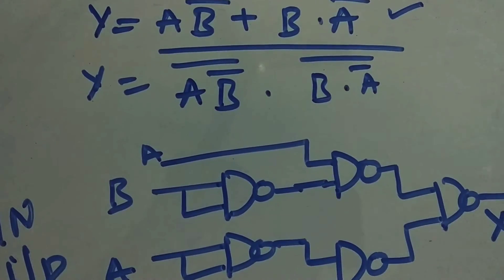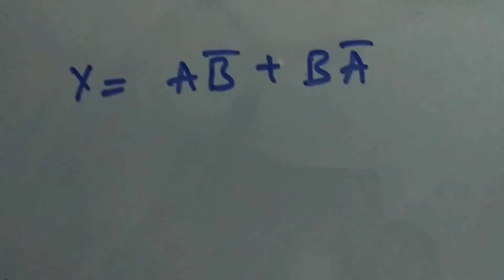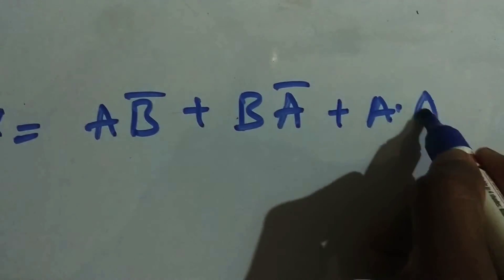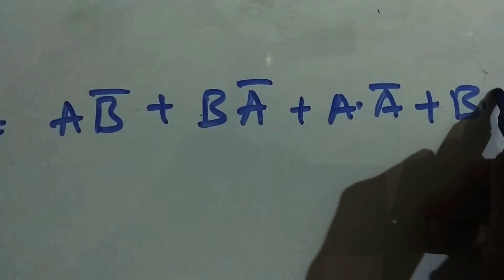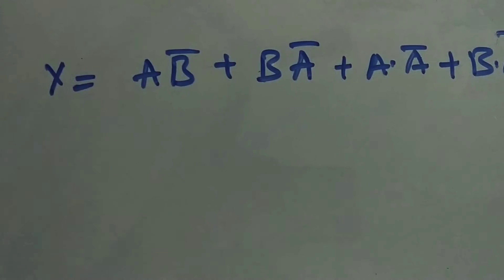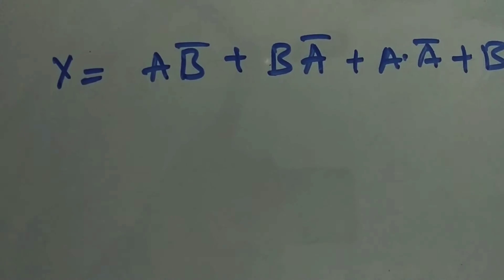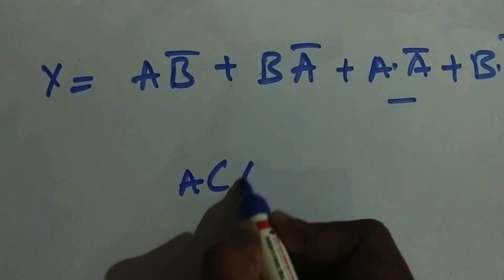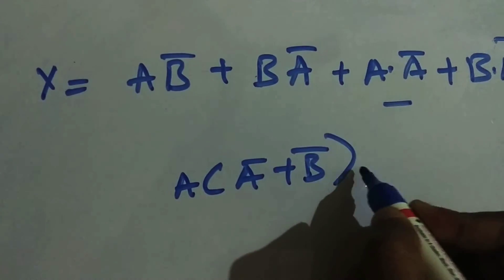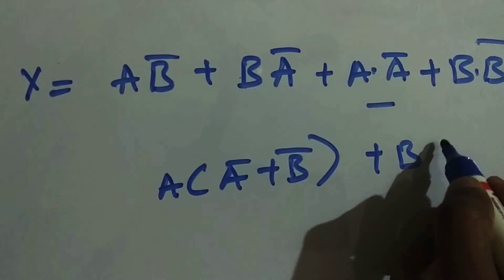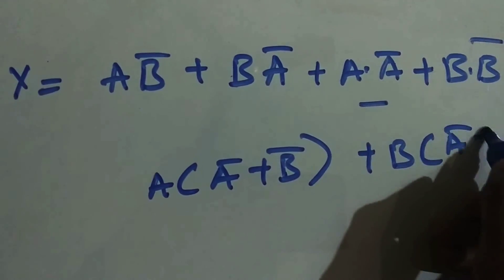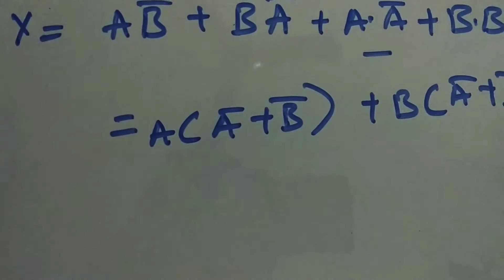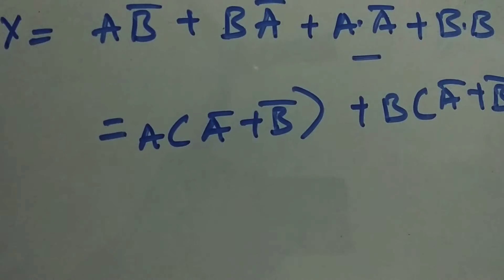The expression can be simplified to reduce the number of NAND gates. Starting from Y = AB bar plus A bar B, I add two extra zero terms: A dot A bar (which is 0) and B dot B bar (which is also 0). Adding zeros doesn't change the expression. Then I factor: taking A common gives A(A bar + B bar), and taking B common gives B(A bar + B bar).